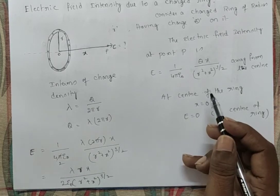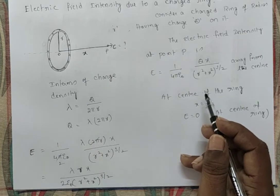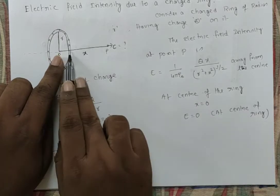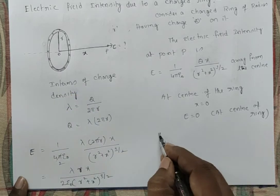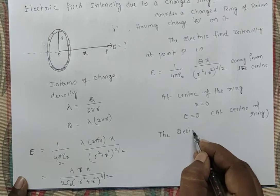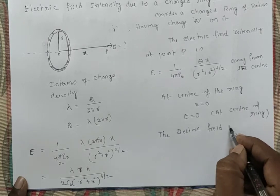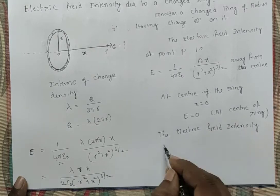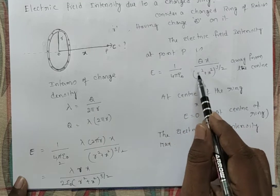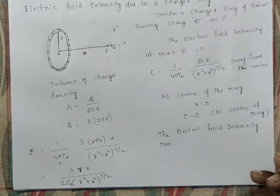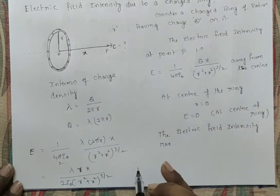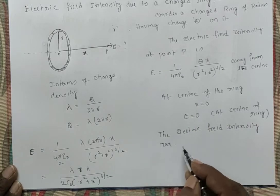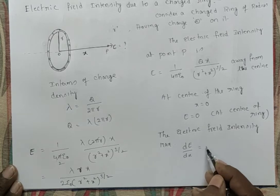At the center it is 0, but on either side, where is the electric field intensity maximum? To find the maximum value, we differentiate the expression with respect to X and set dE/dX = 0. This tells us for which value of X the electric field intensity will be maximum.